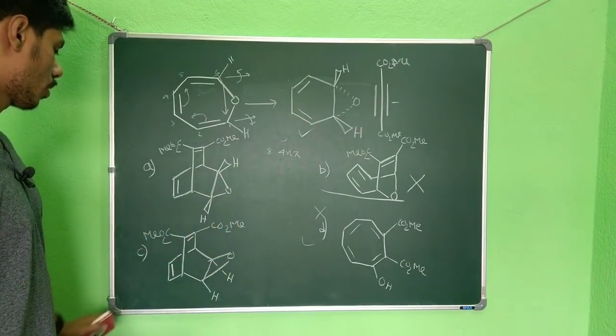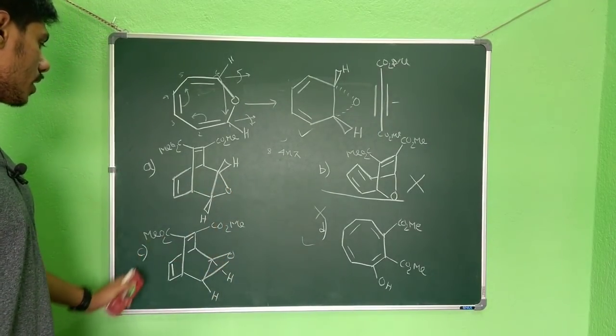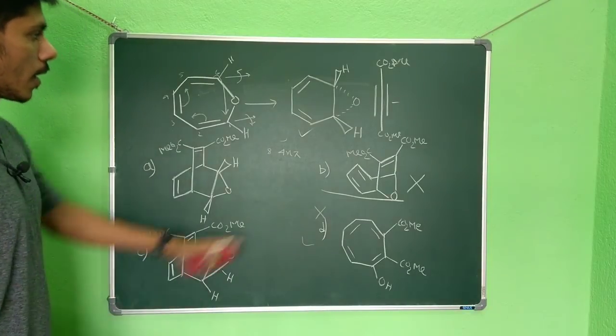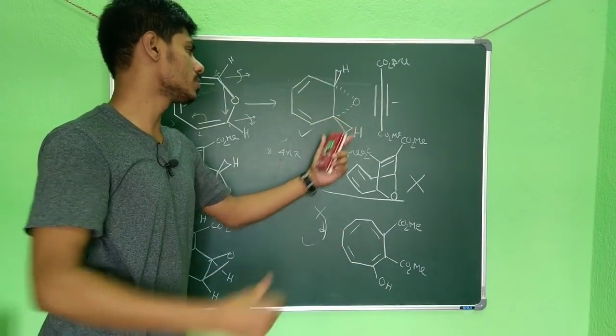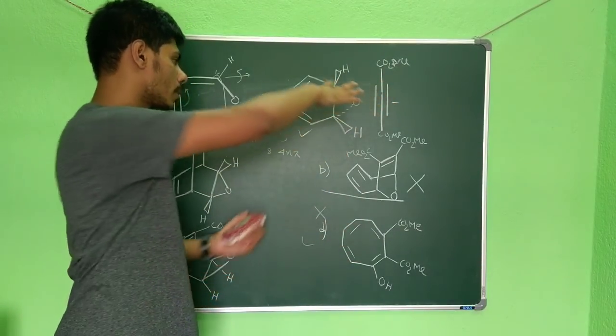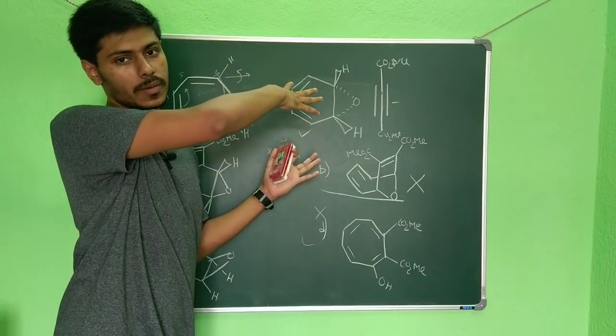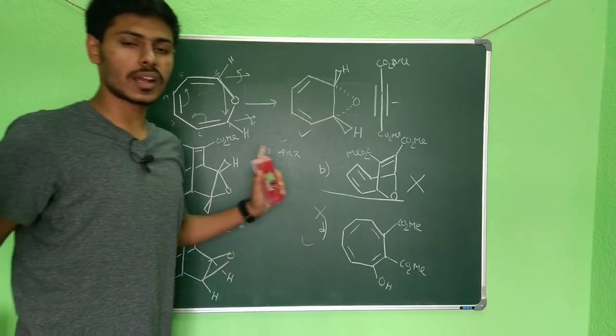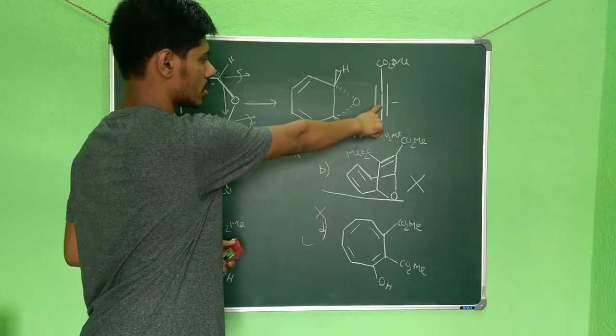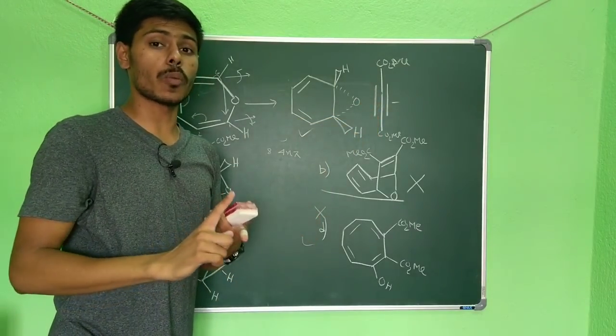Diels-Alder reaction between these two partners will give you either product A or product B. Now you have to decide between product A and B. Here you can see this oxygen is below the plane, so if the oxygen is below the plane this dienophile part will come from above the plane. Whether this oxygen is below or above the plane doesn't matter, but this dienophile will come from the opposite direction of this oxygen.